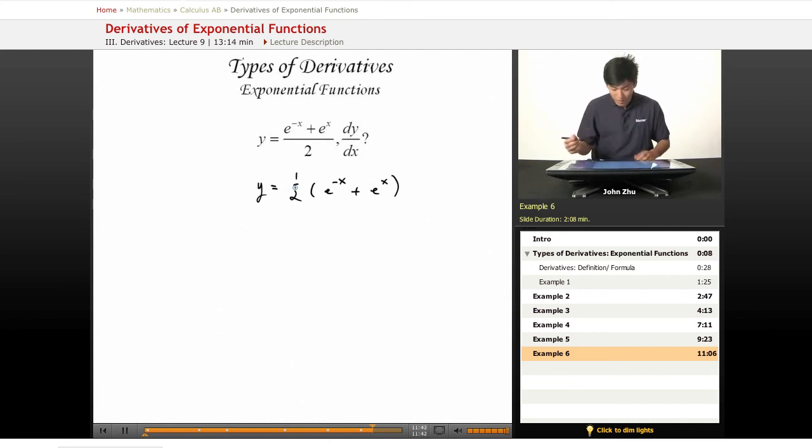So all we're going to have to do is apply the exponential derivative rule directly. So dy dx equals 1 half constant times, e to the x, the derivative of that is just e to the x. But e to the negative x, the derivative of that is simply e to the negative x times the derivative of the top portion, which is negative 1.